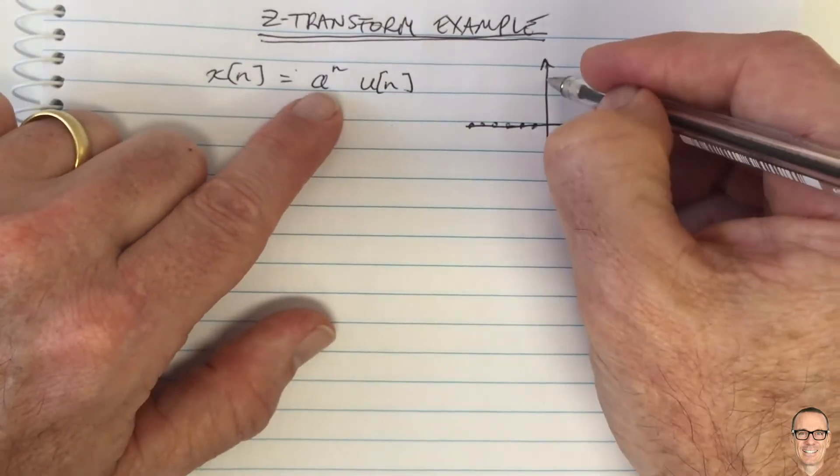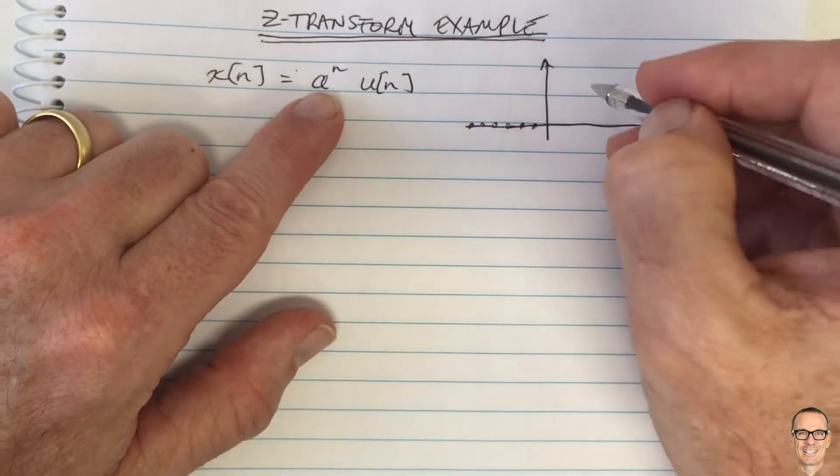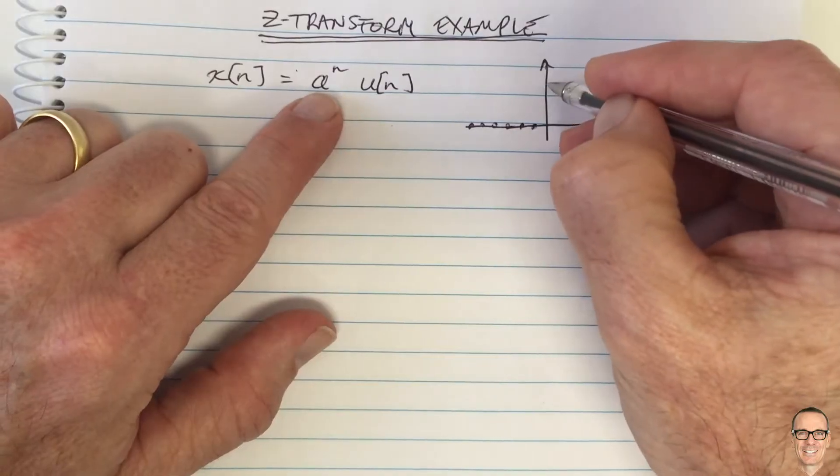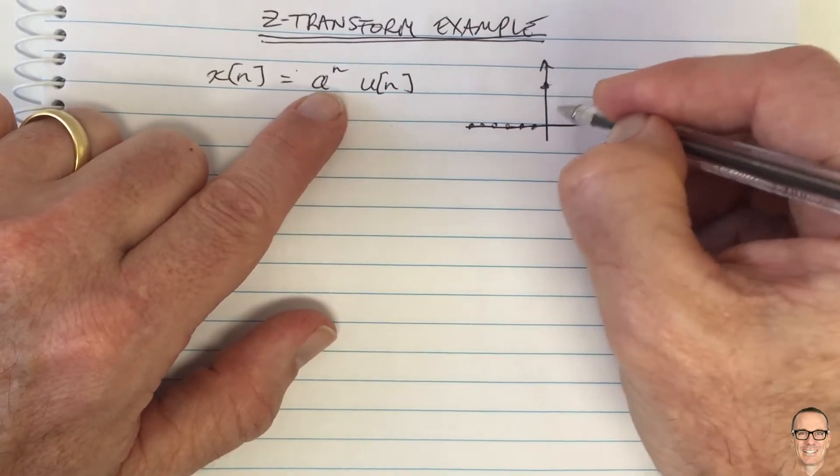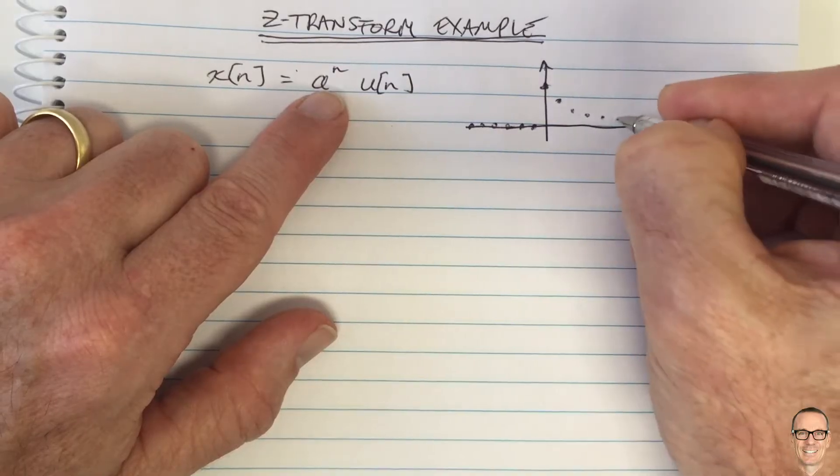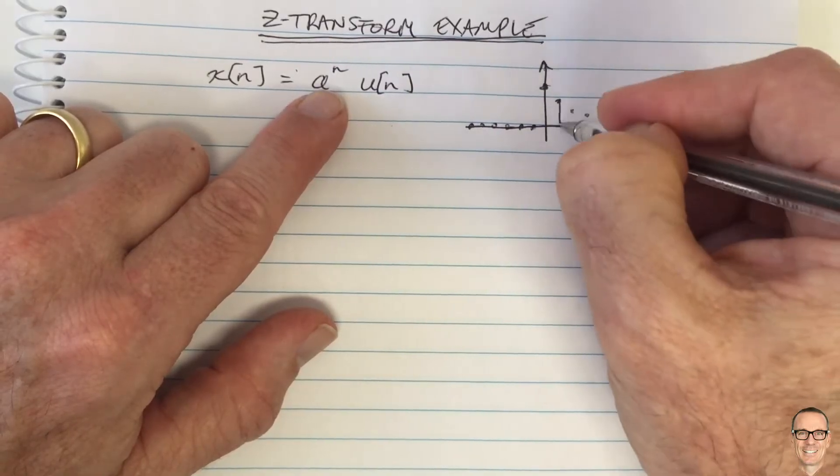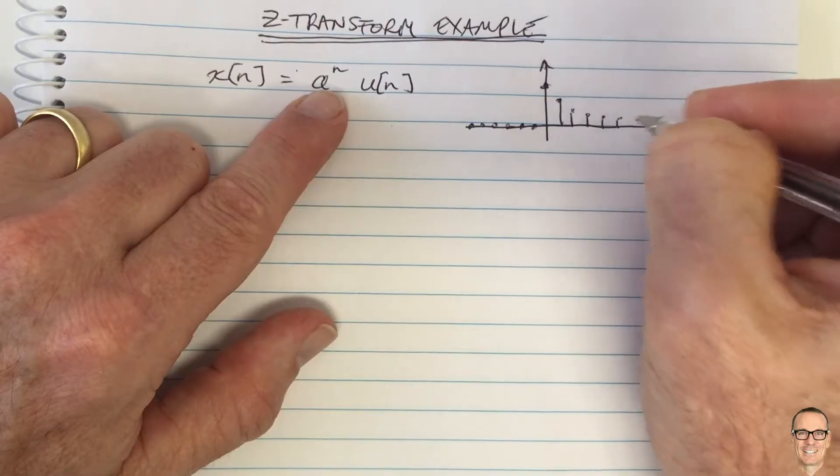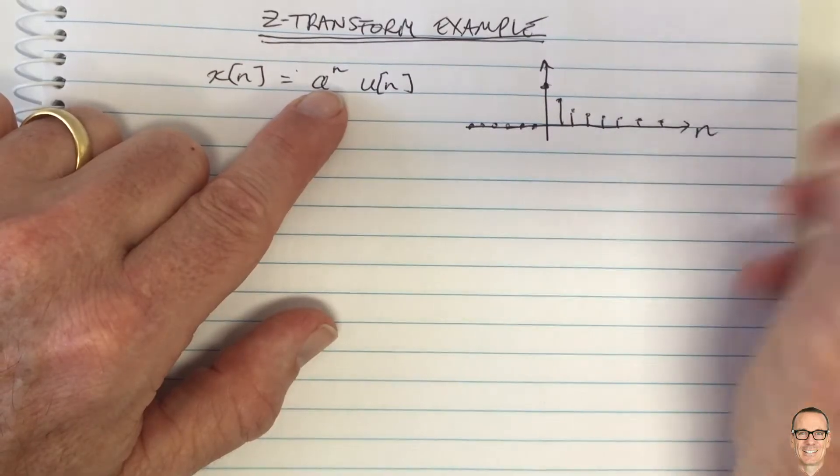And then a to the n, when n equals 0, we have 1. And then we would be a function which is reducing as an exponential. OK, so that's what this function looks like as a function of n.